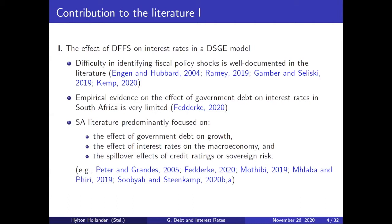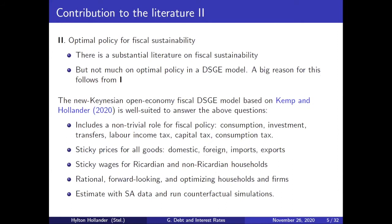The South African literature is mainly focused on development issues — the effect of government debt on growth — and more broadly the effect of interest rates on the macroeconomy. More recently there's been some work from the SARB looking at credit ratings or sovereign risk measures. But I haven't found anything specifically trying to identify the effect of debt-financed fiscal stimulus on interest rates in a DSGE model. Similarly, I haven't come across much asking about optimal policy in this context in a DSGE model.